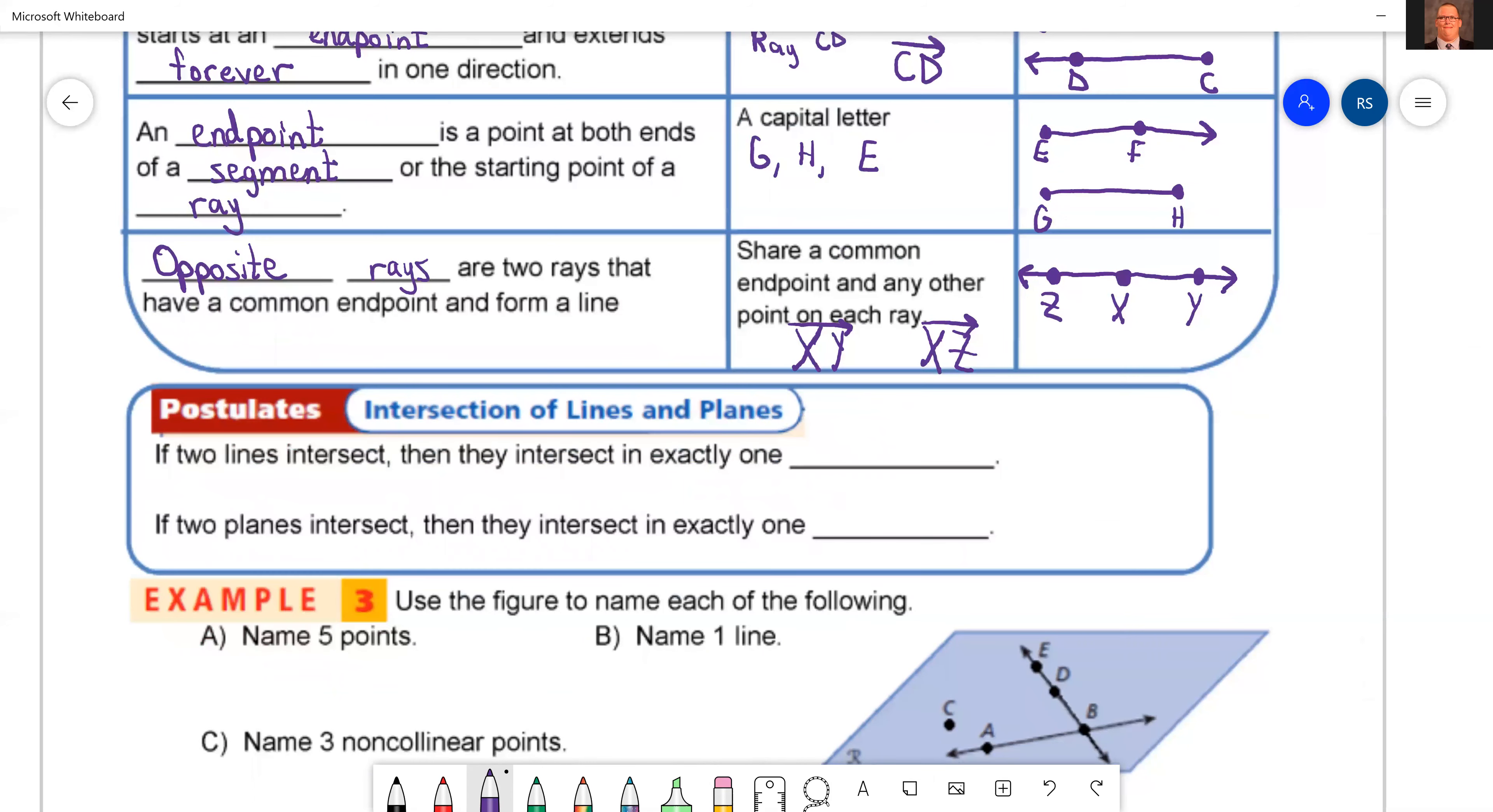Okay, so now we have a couple of postulates. It says that two lines intersect, they intersect in exactly one what? Well, I don't know. Let's see. I've got two lines up here. There's one line, there's two lines. What's this called where they intersect? It's a point. So two lines intersect, they intersect at exactly one point.